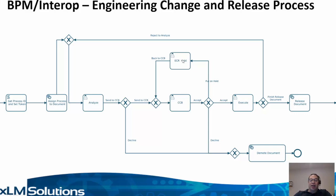It can decline the task, which would then demote the document back to in work, or it could move it on to the execute task. Here, a user would review all the data and make a decision whether to reject the task back to the analyze node or confirm the task and eventually release the document.